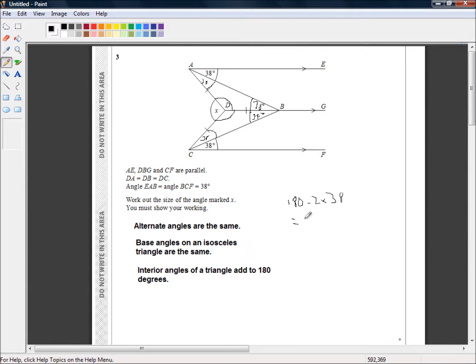is equal to 180 minus... Well, 2 times 3 is 6 and 2 times 8 is 16, so 60 plus 16 is 76. Which is equal to... Well, if we add 4 to 6, we get 80, and if we add 100 to 80, we get 180. So this is 104 degrees.